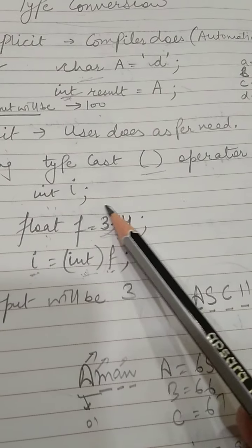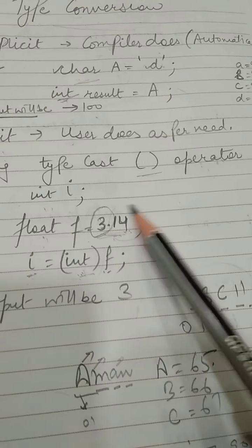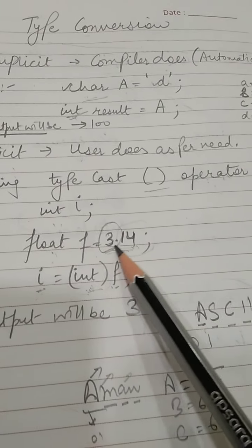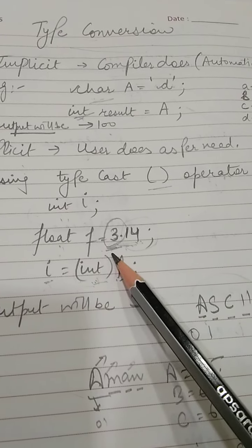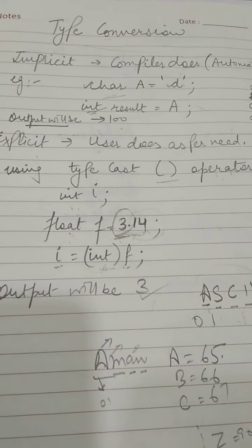So the answer will be only the integer part. The remainder part will be lost. The integer part will be 3, so i will store the answer as 3 only. This was type casting.